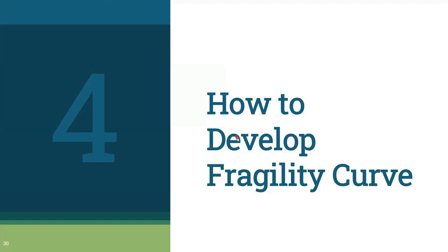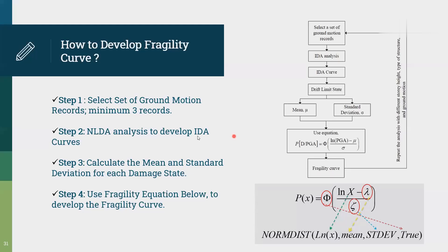How to develop the fragility curve? To develop the fragility curve, you should extract the data. You should extract the data from the ground motion, minimum three records. We should calculate the mean and standard deviation from each damage state, use fragility equation below to develop the fragility. This is the fragility equation. Let's go to the Excel sheet that we prepared to show the fragility curve development.